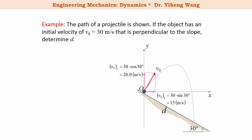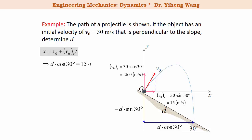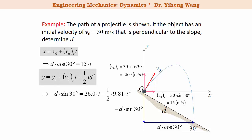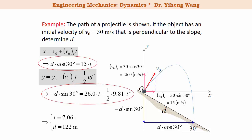Using trigonometry, we can determine that the new horizontal position is d times cosine 30°, and the vertical position is negative d times sine 30°, negative because it is below the x-axis. Therefore, according to the two formulas derived earlier for horizontal and vertical position, we have two equations with two unknowns, d and t. Solving simultaneously gives t = 7.06 seconds and d = 122 meters, which is the answer we're looking for.